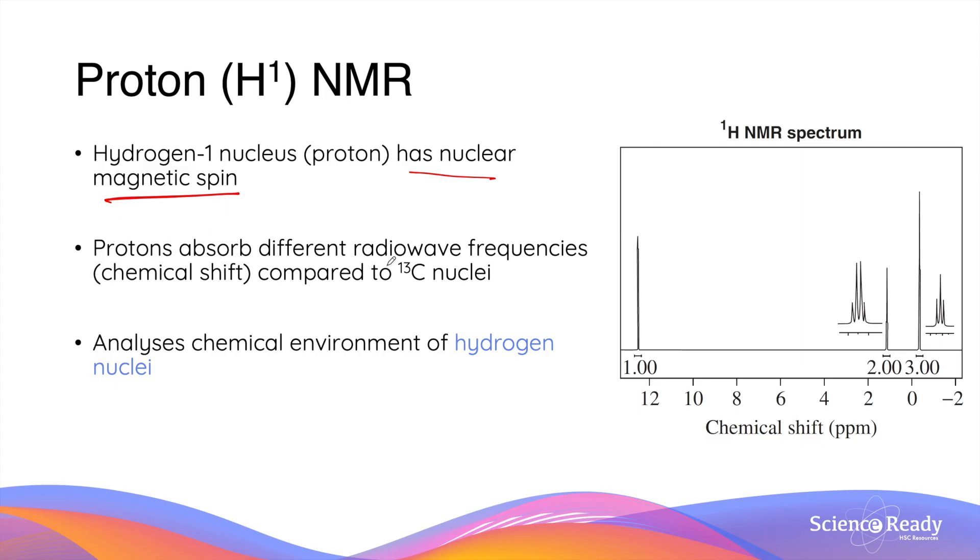Protons absorb different radio wave frequencies compared to carbon-13 nuclei. This is reflected in the chemical shift, as you can see in an example of a proton NMR spectrum. The chemical shift in ppm of proton NMR are much smaller numerically compared to carbon-13 nuclei. In contrast to carbon-13 NMR, proton NMR analyzes the chemical environment of hydrogen nuclei.